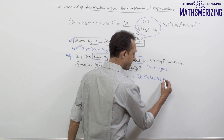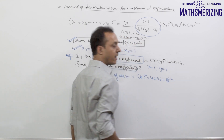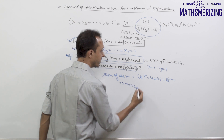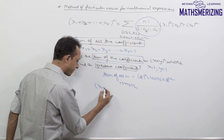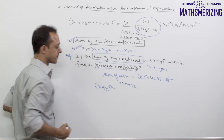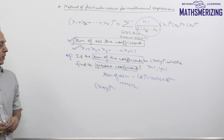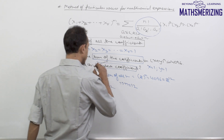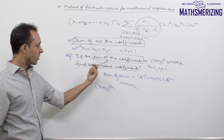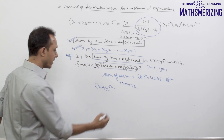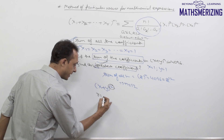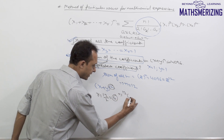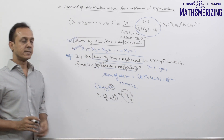Now 4096 is 2 to the power 12, so the value of n is 12. This is the binomial expansion of (x + y)^12. In this expansion, the coefficient of the middle term is greatest. Because 12 is even, the value of r will be 12/2 = 6. So the greatest binomial coefficient is 12C6.